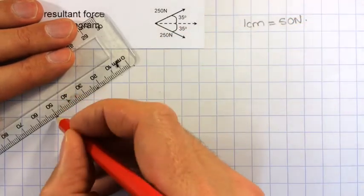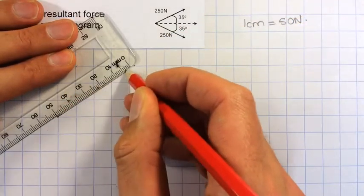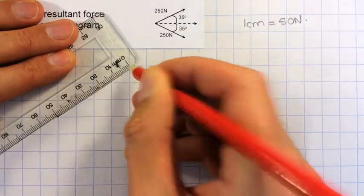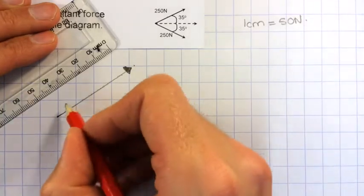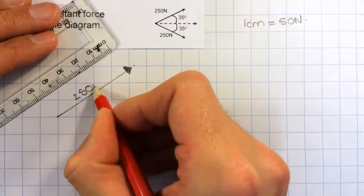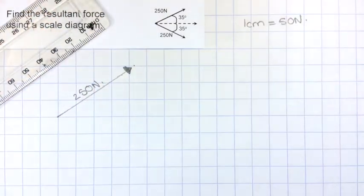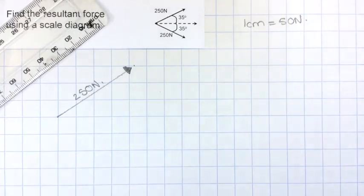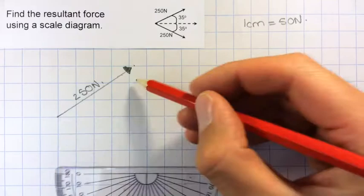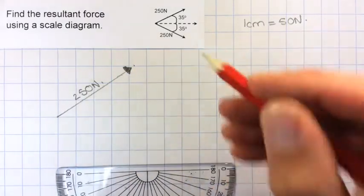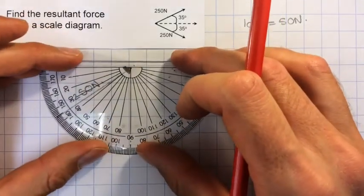If I get that lined up nicely, that's 5 cm long so I can label 250 N. Now I need to draw my second vector going at 35 degrees downwards from the tip of this one in the tip-to-tail method.